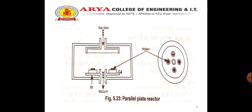In reactive ion etching, we have two systems: the parallel plate system and the hexode system. In the parallel plate reactor, the neutral electrode is attached to the chamber wall to enlarge its effective area. In the parallel plate reactor as shown in the diagram, the plasma must contact the chamber wall; as pressure increases, the plasma space expands and the plasma loses contact with the wall.